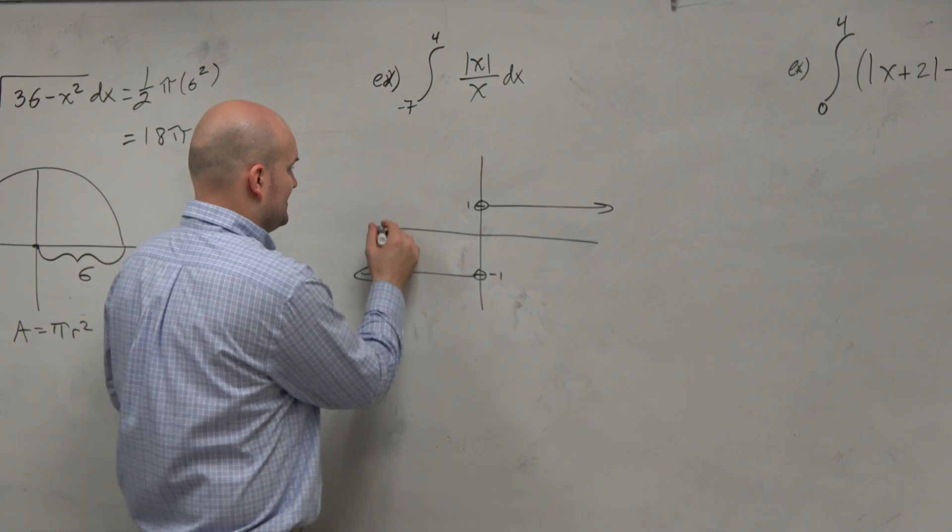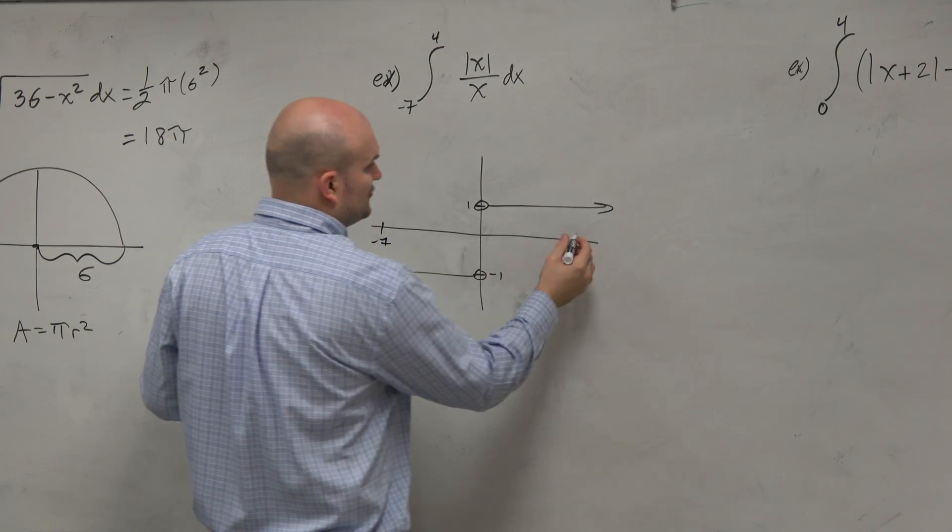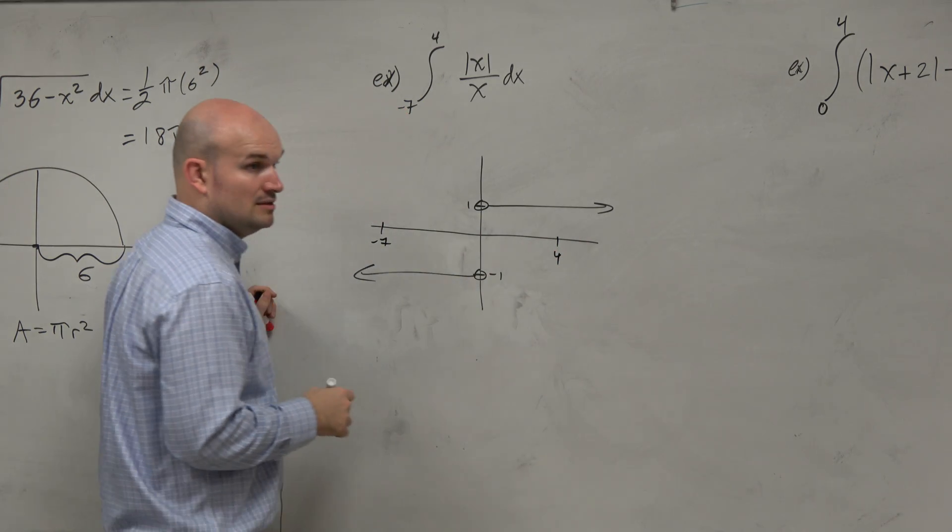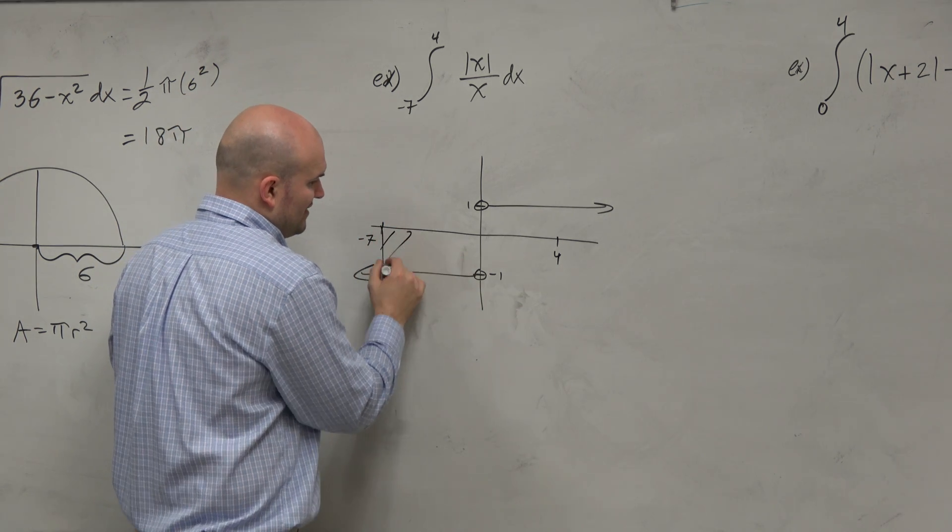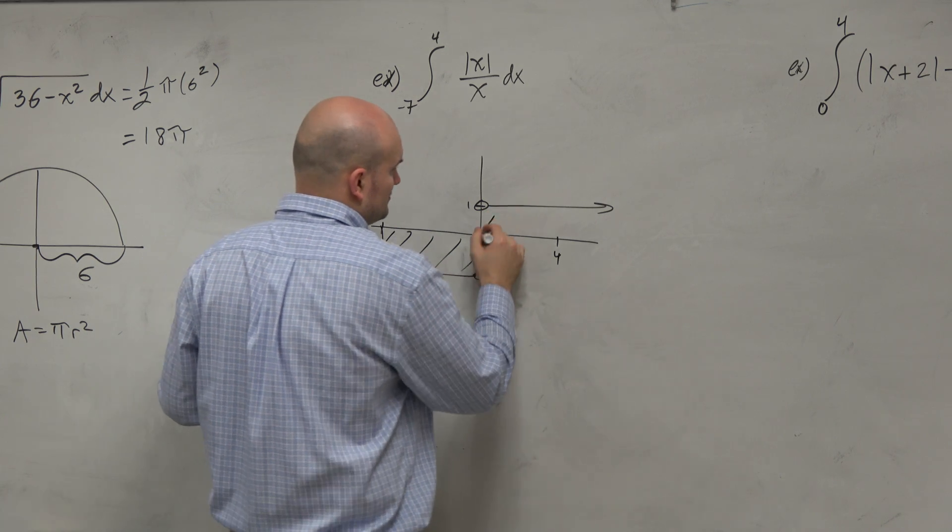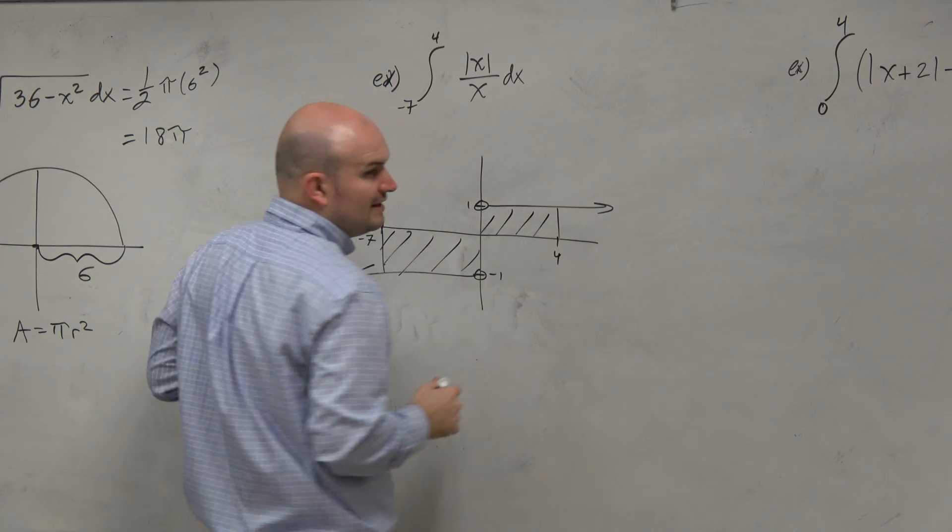So if I'm just trying to evaluate from negative 7 to 4, basically all I'm trying to do is, let's put the negative 7 over here. I'm just trying to find the area here and the area there.